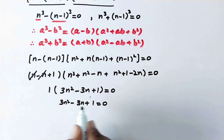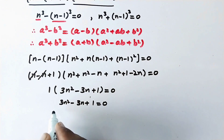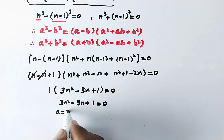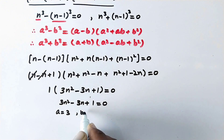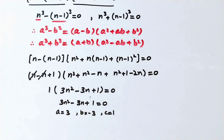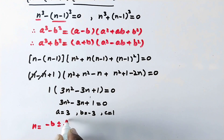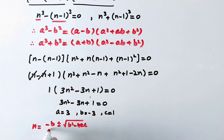Here we have a quadratic equation where a is equal to 3, b is equal to minus 3, and c is equal to 1. We use the quadratic formula: n equals minus b plus or minus square root of b squared minus 4ac, all over 2a.